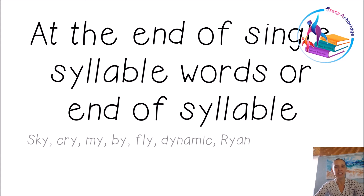At the end of a single syllable word it's going to make the I sound, but it could also do that on the end of a syllable. So on the end of sky, cry, my, buy, fly. But then if we think about words like dynamic, on the end of the first syllable 'di', you can hear the I sound being made by letter Y. And in the name Ryan — R-Y, Ryan. So those are the first two most common sounds.